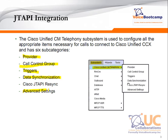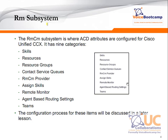And then, of course, you have some advanced settings. The RM subsystem is where the ACD attributes are configured, such as your call center queue, agent, skills group. You have monitor, agent-based routing, and teams. These are some of the things that you need to configure that are related to automatic call distribution.